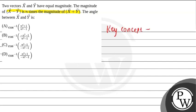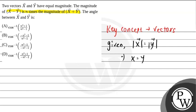The key concept used in this question is of vectors. So the given values are: the magnitude of x vector and magnitude of y vector are equal, that is |x| = |y|.